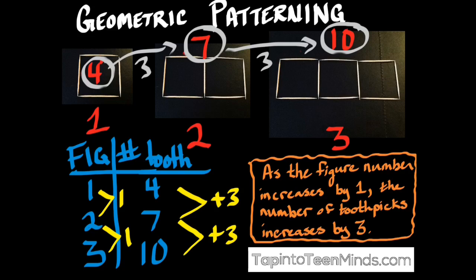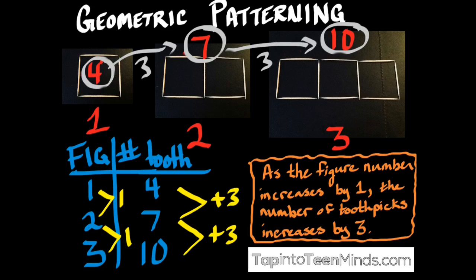So we can say for our pattern that as the figure number increases by one, the number of toothpicks increases by three. It's also important to note that we did start with four toothpicks, not three. Our pattern goes up by three, although our initial number of toothpicks was four, and that will be important to us later on.